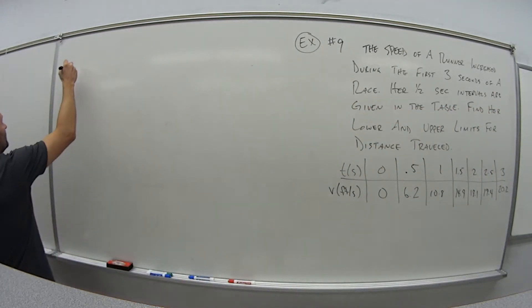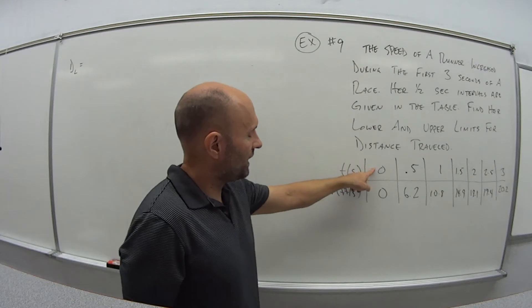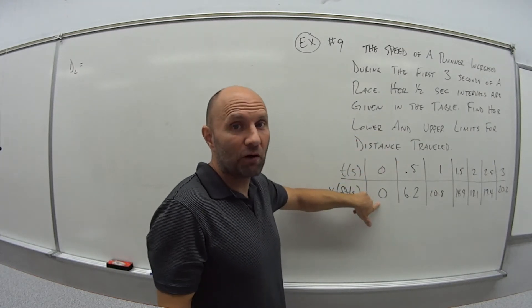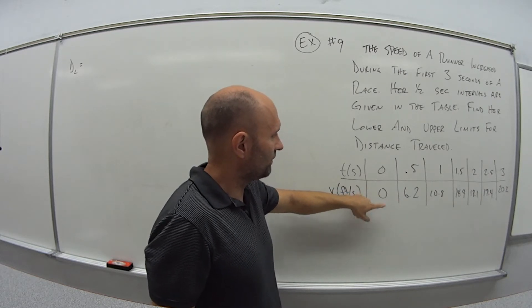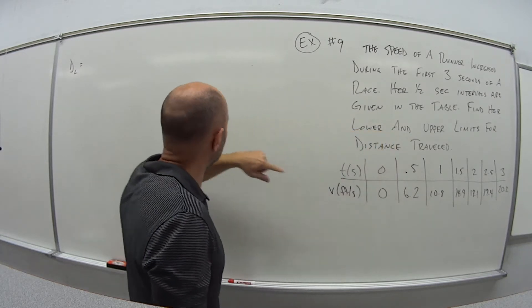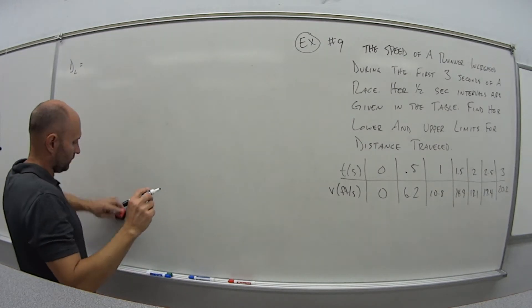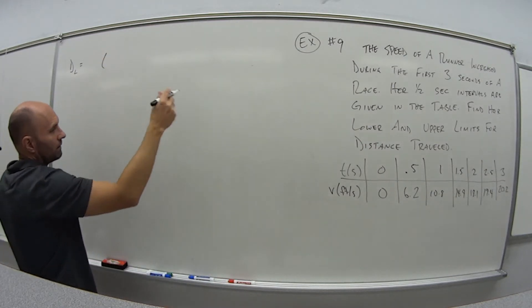So for the lower limit, so let's call it DEL, distance of the lower, we're going to use the left end point of this interval times the function value, which in this case the function value is the velocity that was given. So for this first one, from 0 to 0.5, that means it's 0, sorry, so we want the delta x, which is what? Well, it's half second interval, so that's a half.